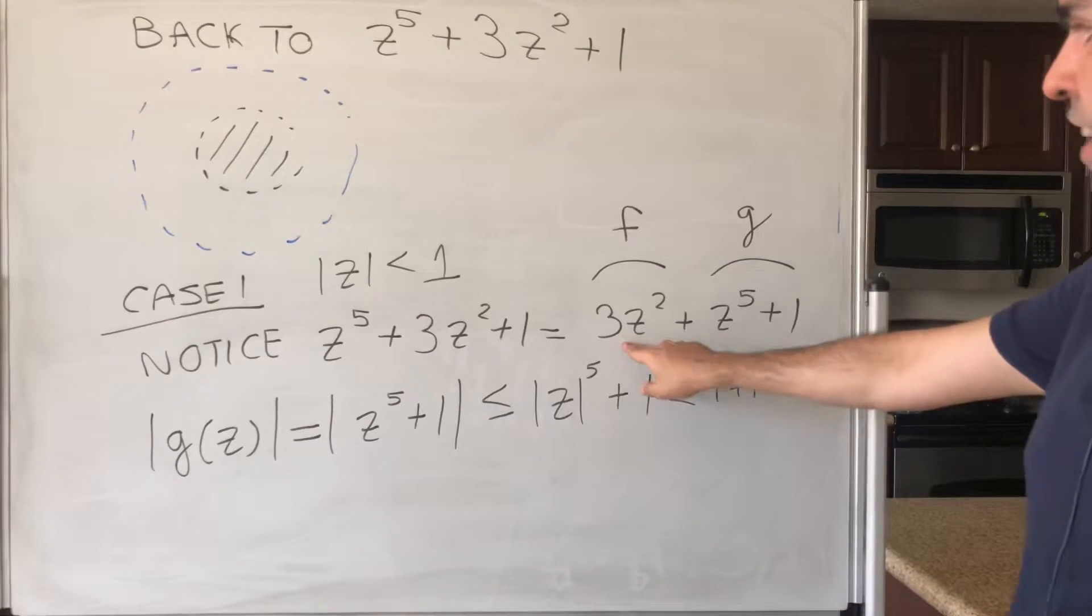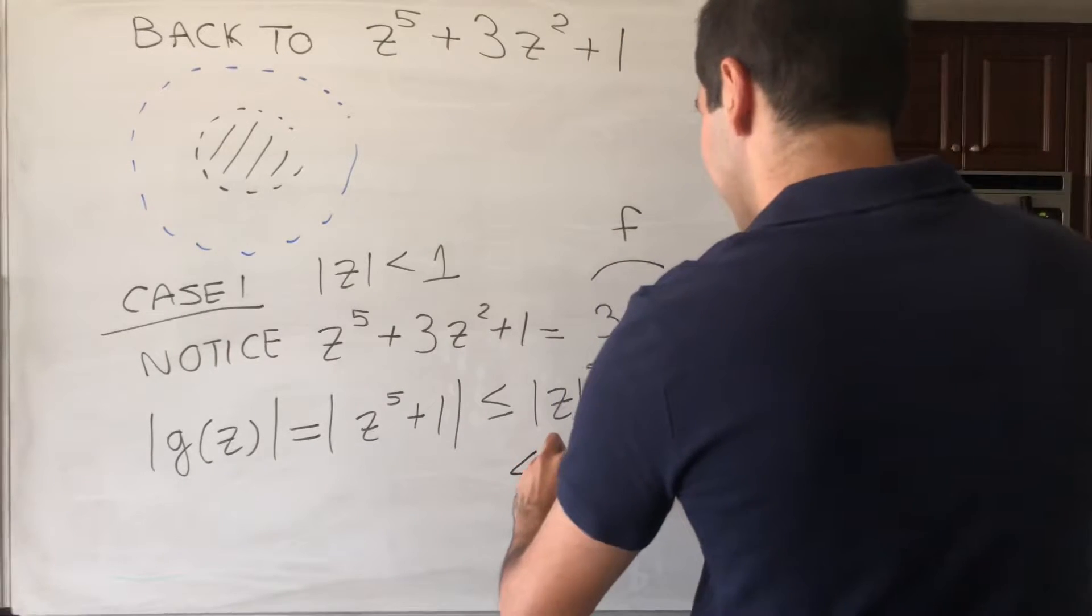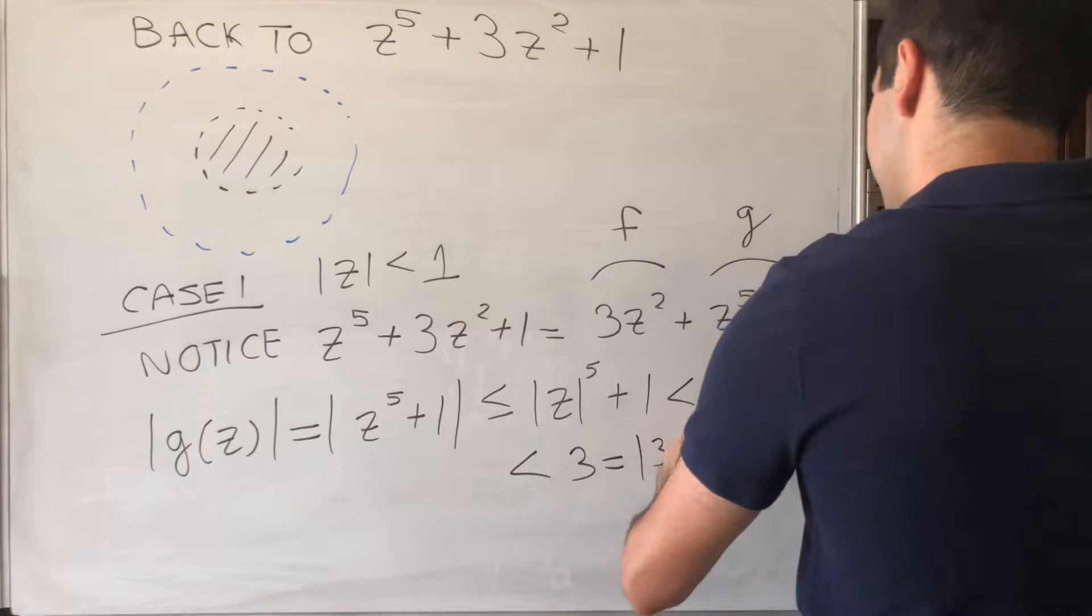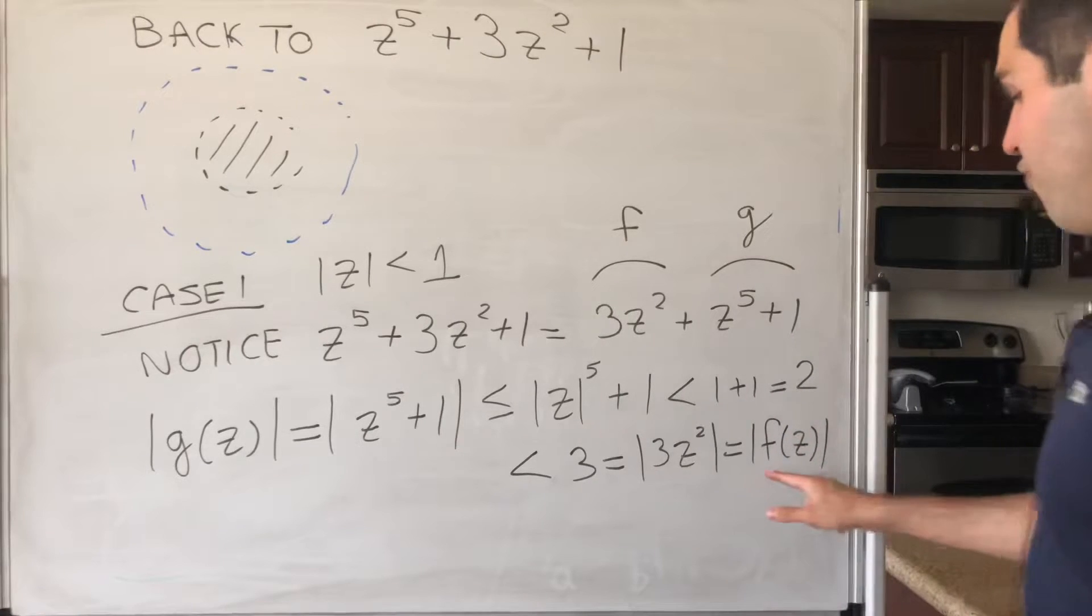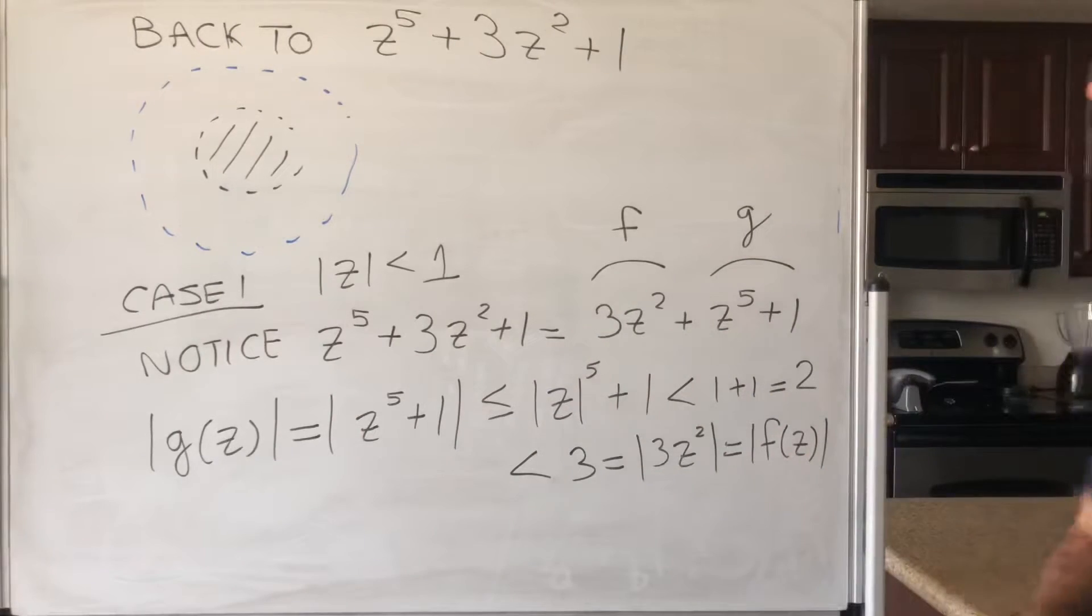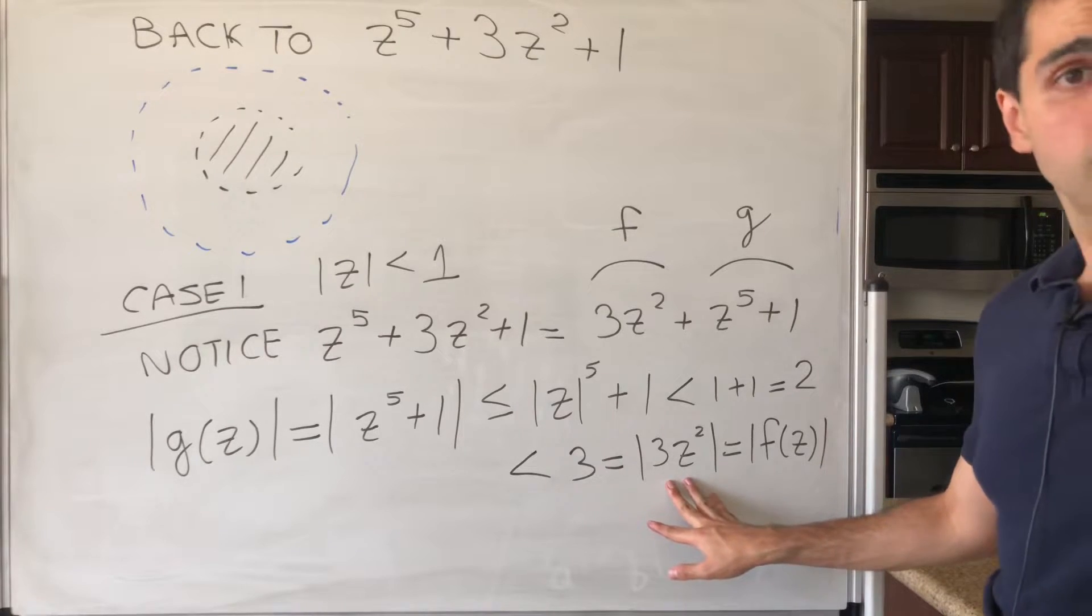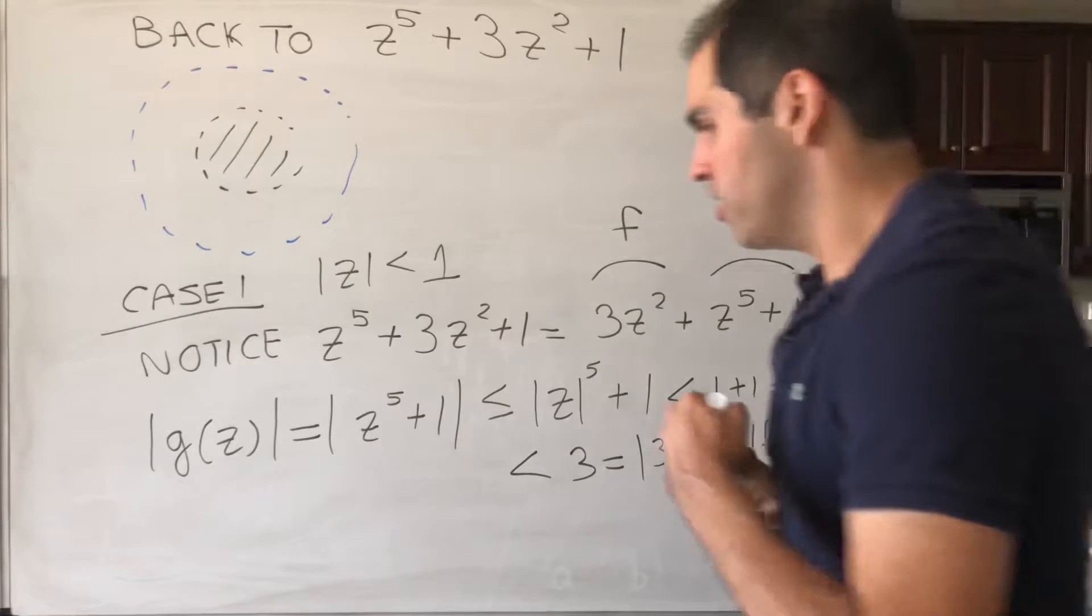But on the other hand, the modulus of F is 3. So in fact, this is less than 3, which is the absolute value of 3z^2, which is F. So in fact, F dominates the function G, but the point is F has a very nice number of roots. It's precisely two roots up to multiplicity.